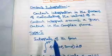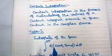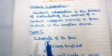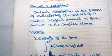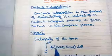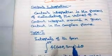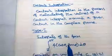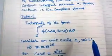Type 1 integrals are of the form integral from 0 to 2π of a function of cos and sine dθ. For this type, we consider a unit circle C where mod z equals 1.